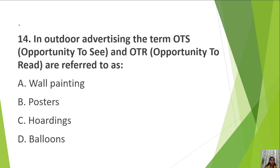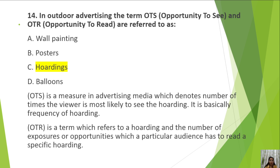Next: in outdoor advertising, the terms OTS (opportunity to see) and OTR (opportunity to read) are referred to as A. Wall painting, B. Posters, C. Hoardings, D. Balloons. OTS and OTR are related to hoardings. Opportunity to see measures how many times a viewer is most likely to see the hoarding — the frequency of hoarding exposure. Opportunity to read refers to the number of times a particular audience actually reads a specific hoarding.